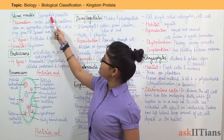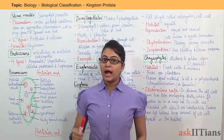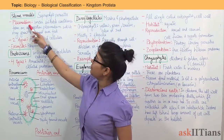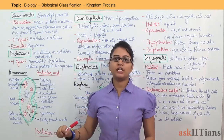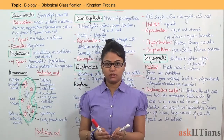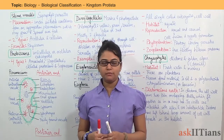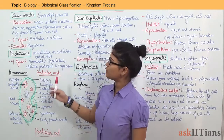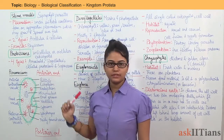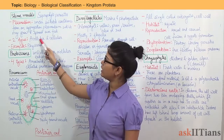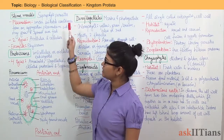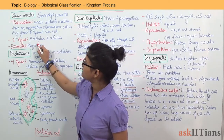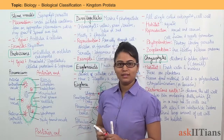Slime moulds are saprophytic. Under slime moulds comes the term plasmodium. Under suitable conditions, slime moulds form an aggregation known as plasmodium, which can spread over several feet. There are two types of slime moulds: acellular and cellular. An example of a slime mould is Physarum, which is an acellular slime mould.